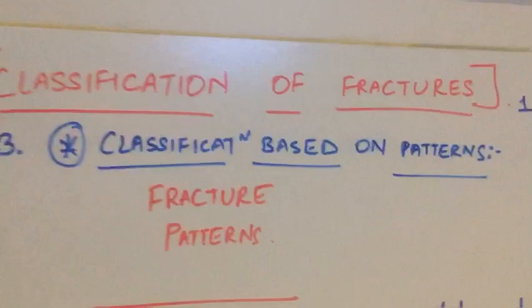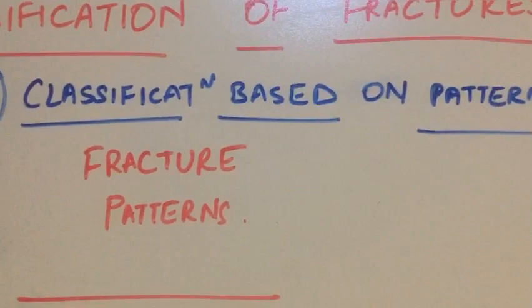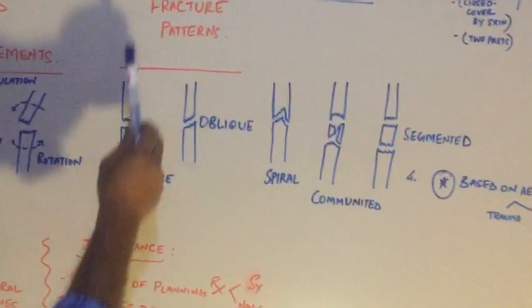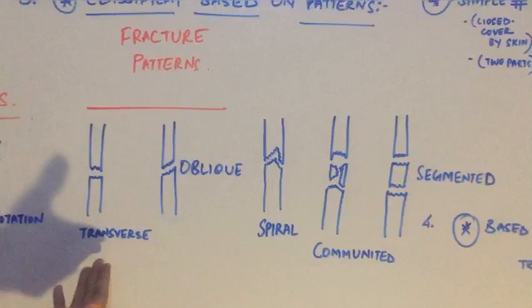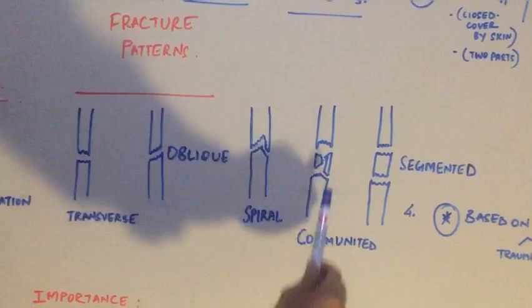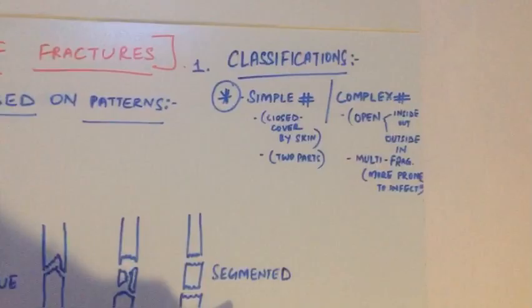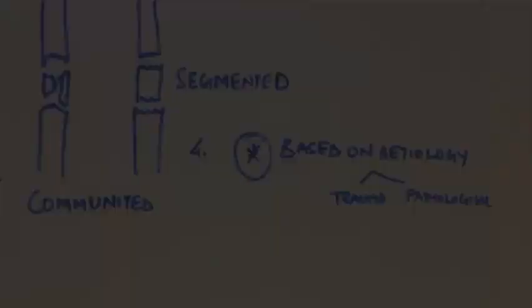Now we move on to our classification based on patterns. How are fracture patterns important and why are they important? You can see that I have drawn different types of fracture patterns here: the transverse type which is the most common, the oblique fractures, the spiral fractures, comminuted - that means it has multiple fragments. And based on etiology, there are two types - you can divide fractures into traumatic types and those with pathological types.